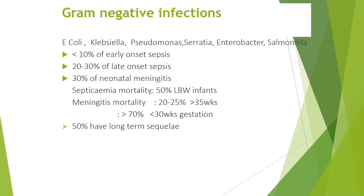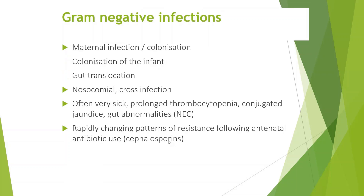The mortality is higher in low birth weight babies, up to 50%. Early diagnosis includes your survival. Meningitis mortality is 20 to 25% for more than 35 weeks gestation, and in less than 30 weeks the mortality is very high. 50% may have long-term sequelae.